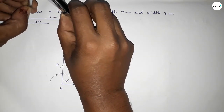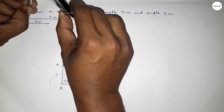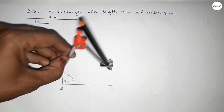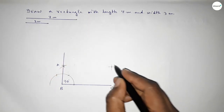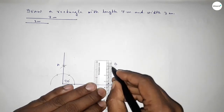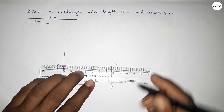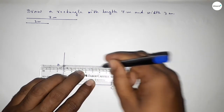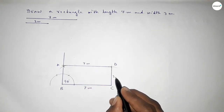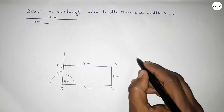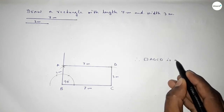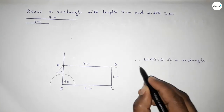Taking the length 7 centimeter using the compass, putting the compass on point A and cutting here. Both curves intersect at point D. Joining C and D, then joining A and D to get rectangle ABCD. This side is 7 centimeter, this side is 7 centimeter, this side is 3 centimeter, and this side is 3 centimeter.